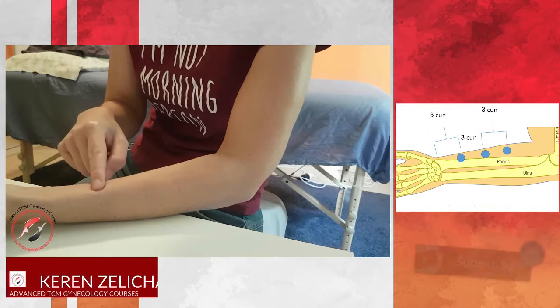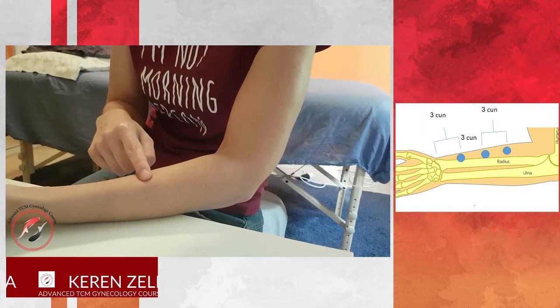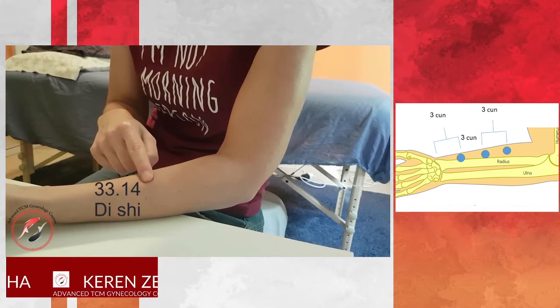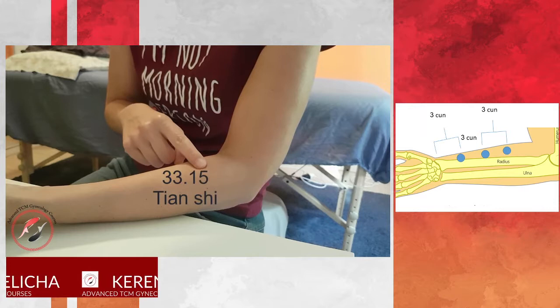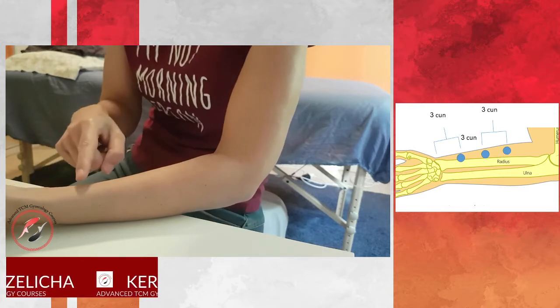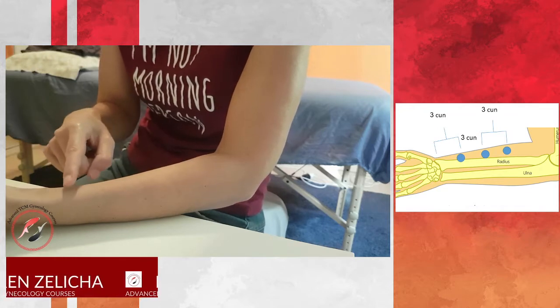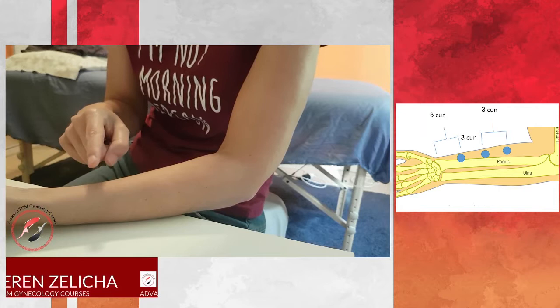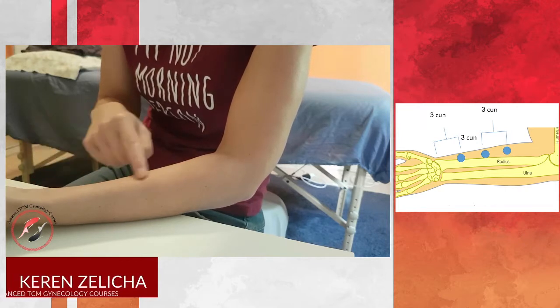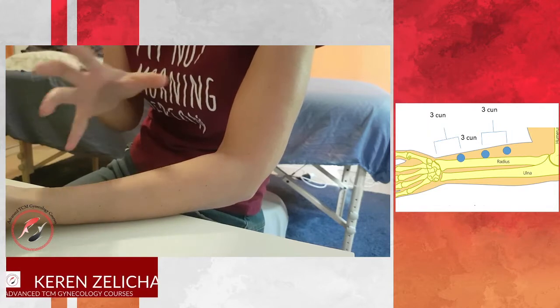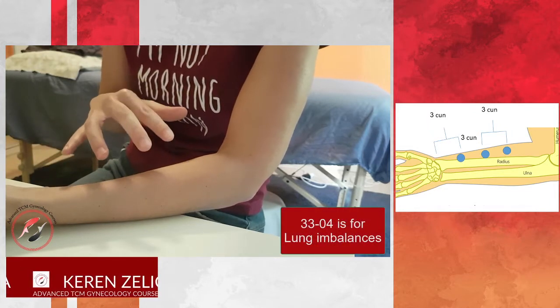The first point 3313 is called Ren Shi, the second one 3314 is called Di Shi, and the upper one is called Tian Shi which is 3315. The name of the point Ren is human, Di is earth, and Tian is heaven. The character for Shi means a scholar or a soldier. And why is it a soldier? Because the lungs defend the heart. The lungs are lying on both sides of the heart and those points are indicated for lung disorders, lung issues.